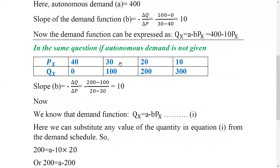If we have one value — say initial price 30 and new price 20 — the corresponding quantity at price 30 is 100 units, initial demand 100, and new demand 200. So delta-Q over delta-P: new demand 200 minus 100, and new price 20 minus 30, which gives us negative 10 as the slope.